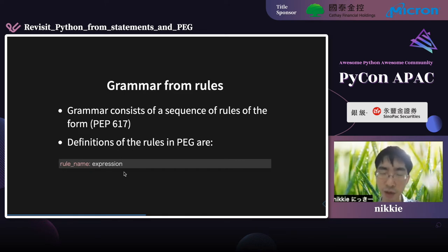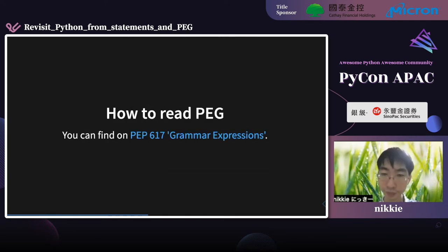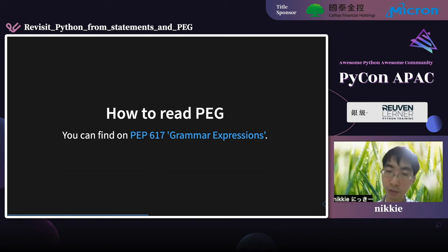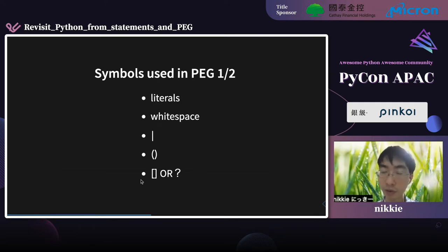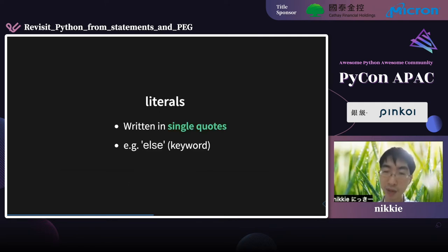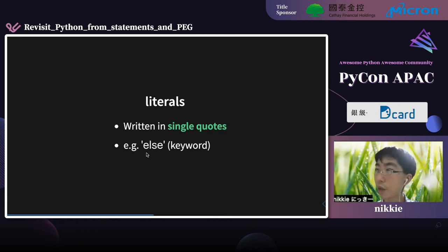We will see how an expression is written later. To be able to read definitions of rules, let's look at how to read the expression — you can find it on PEP 617. You will see a lot of symbols; this is the first half. I will introduce them in order.